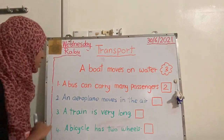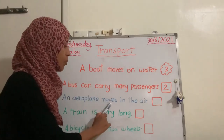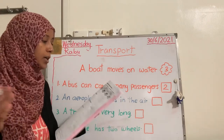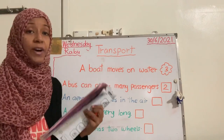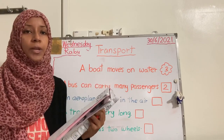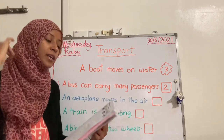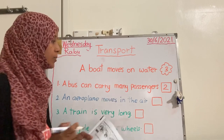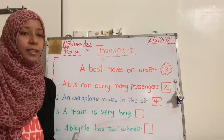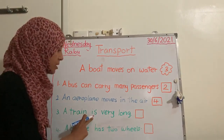Let's go to number three: an airplane moves in the air. Where is the airplane picture? Find the airplane picture — an airplane can move, it will be flying. Yes, it's number four. Excellent!